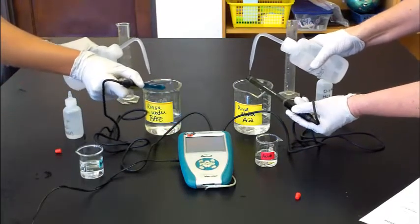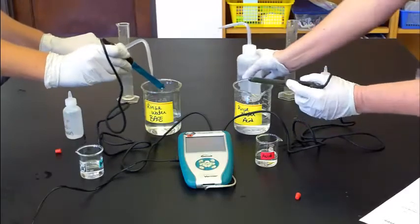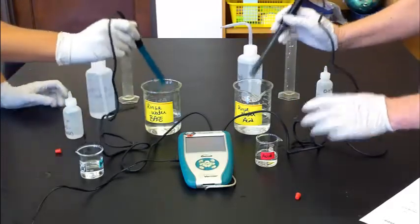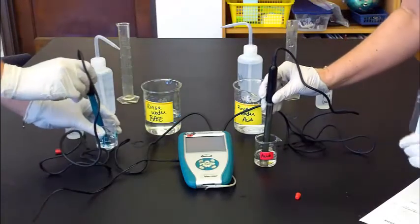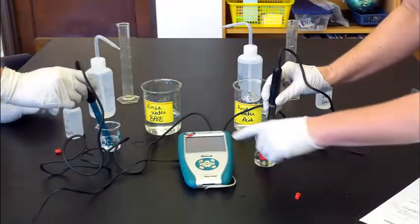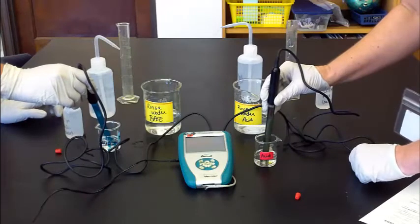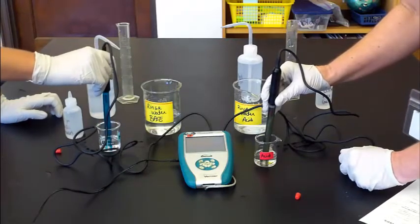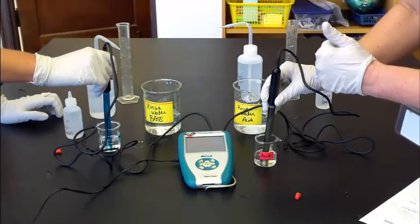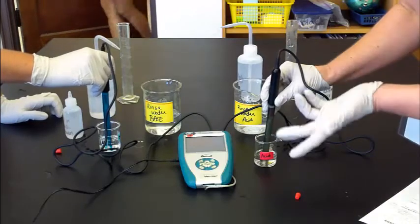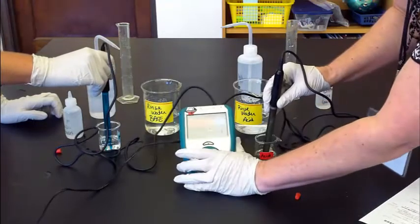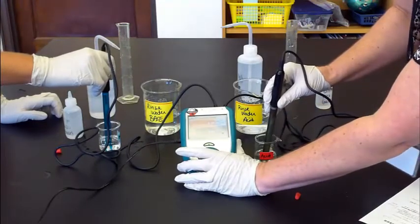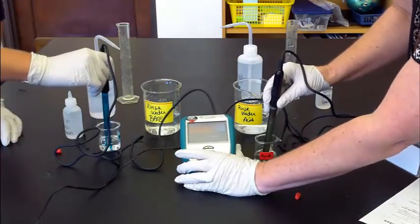So the acid, I would say, is 8.23, 8.24. The base is still fluctuating, so wait till it finds its common number. I'd say after 30 seconds, just take a reading. It pauses, yeah.